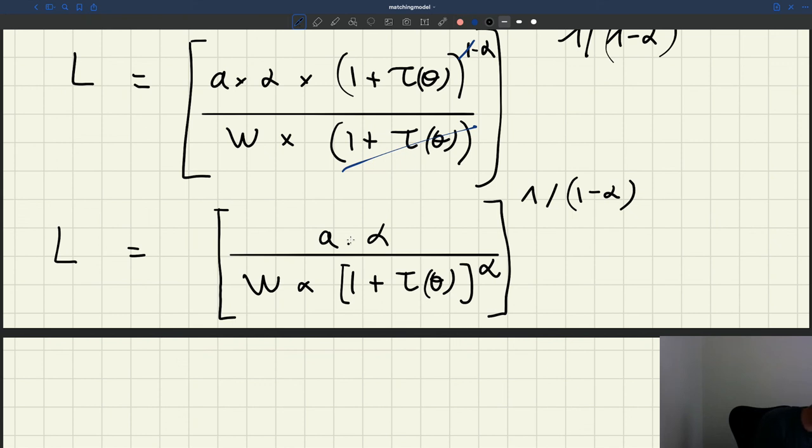It's a labor demand, so I can put a little superscript d. And you can see what are the variables that are involved here. I have θ, of course, and I also have w.